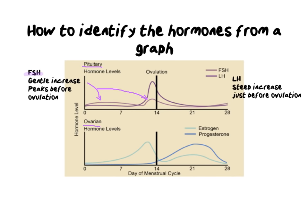The sister hormone to FSH is LH, luteinizing hormone. You can see from the graph that LH is very low in the beginning — it's the darker purple line lower down. The only time it truly peaks is a very steep, dramatic increase just before ovulation. That is the signifier that you're working with LH, because both FSH and LH peak before ovulation — they are the hormones that cause ovulation. It's important not to confuse these two hormones with the ovarian hormones, as the ovarian hormone peak is less dramatic and increases more gradually.